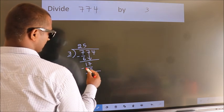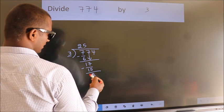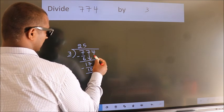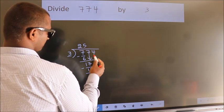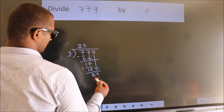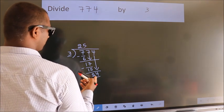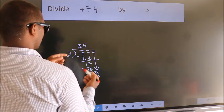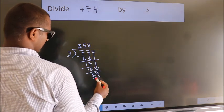Now, we subtract. We get 2. After this, bring down the beside number. So, 4 down. So, 24. When do we get 24? In 3 table, 3 eights, 24.